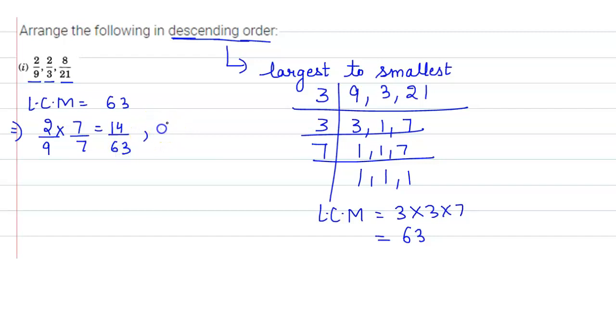Next is 2 by 3. So 63 divided by 3 gives 21. So 2 into 21 upon 3 into 21. So here we get 42 upon 63.